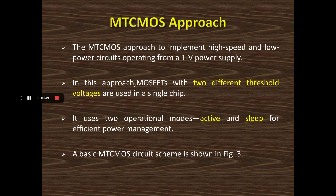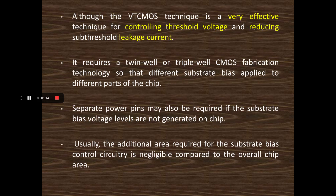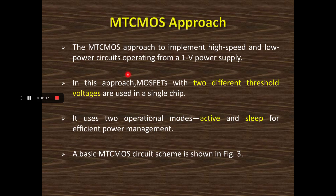The MTCMOS approach is implemented by applying high speed and low power circuits operating from a one volt supply voltage. In this approach, MOSFETs with different threshold voltages are used in a single chip. This is the basic idea behind MTCMOS. Two different threshold voltages are maintained in a single chip to achieve the highest speed of the device as well as lower power dissipation.